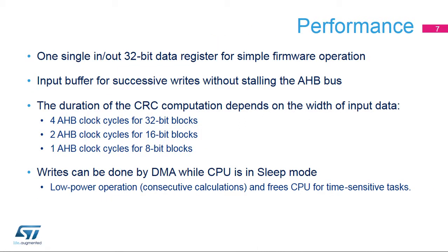The CRC data register includes an output buffer which allows for immediate writes by the CPU or DMA peripheral of a second data word without waiting for any wait states due to an active CRC computation. The CRC data register can be accessed by word, right-aligned half-word, and right-aligned byte.